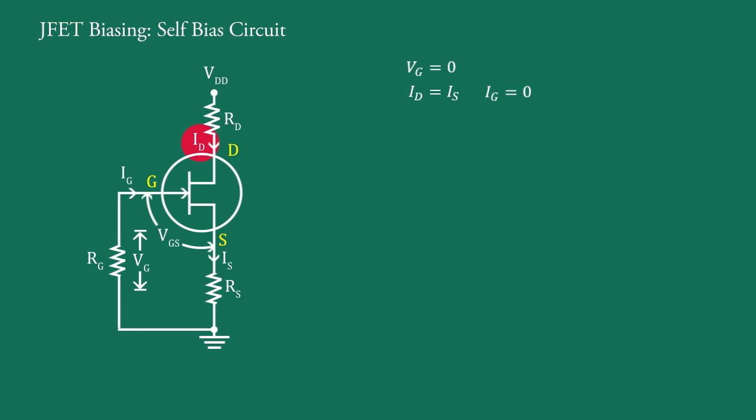Therefore voltage across RS would be VS equals ID into RS. Now applying Kirchhoff's law to this loop, we get VGS plus ID RS equals zero.